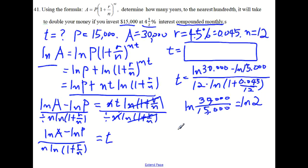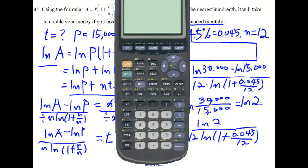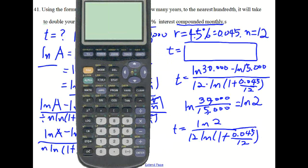So now t is ln of 2 over 12 ln of 1 plus 0.045 over 12. Okay. Now we can use a calculator to evaluate this expression. I already did it. So let's see what the number is.